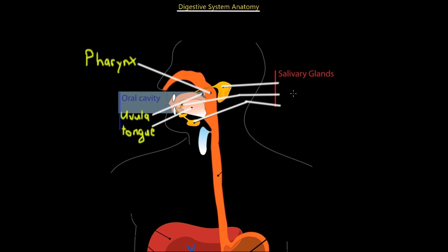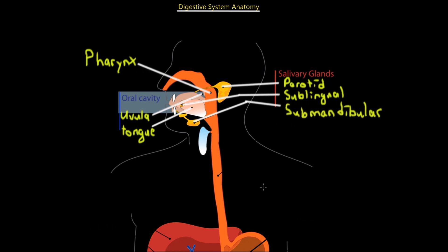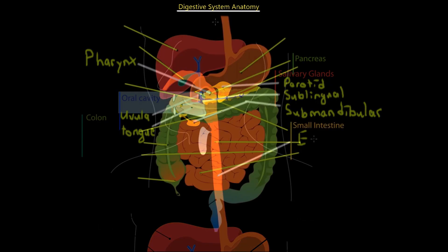We've got three salivary glands that release saliva inside our mouth, which are the first enzymes involved in digestion. In the mouth we're going to have primarily mechanical digestion but also some chemical digestion through the release of saliva because it does have some enzymes - that will be discussed in greater detail in the next lecture. The three glands are: the parotid gland, which is the biggest gland at the back and sides of the mouth; the sublingual gland, closer to and under the tongue; and the submandibular gland, under the chin. The last structure here is the esophagus.